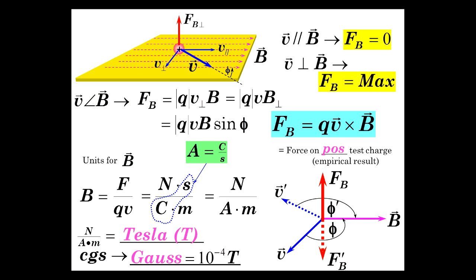And a Gauss is 10 to the negative 4 Tesla. So, you'll hear Gauss being used in reference to magnetic fields more so than you'll hear about Tesla.